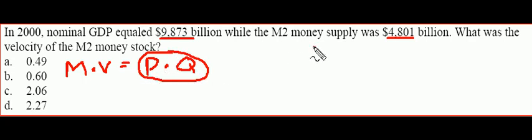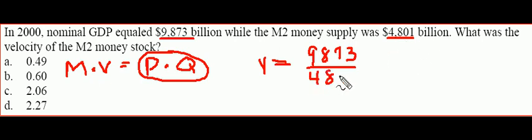So, we can go ahead and write that number in the top, 9, 8, 7, 3, as our nominal GDP. And if we divide that by M, that'll leave V by itself. So, velocity would simply equal to nominal GDP from the right-hand side, divided by the stock of money, which is 4,801.